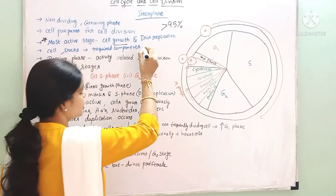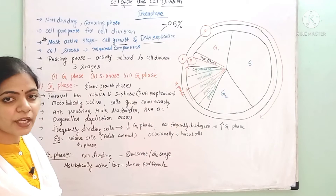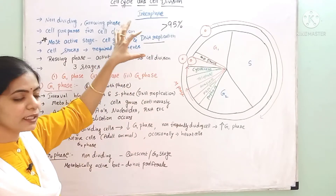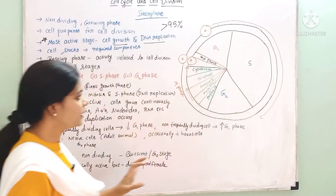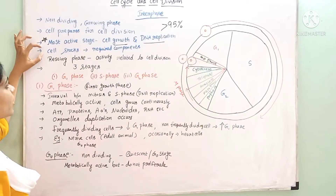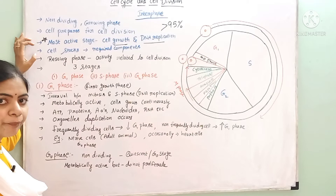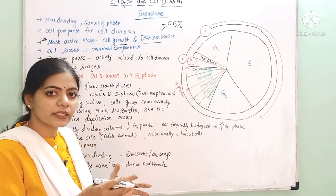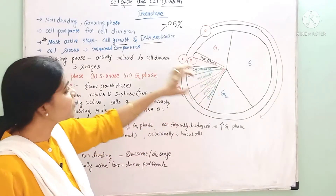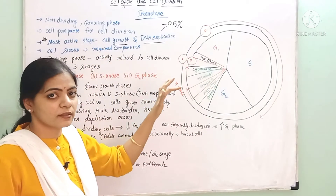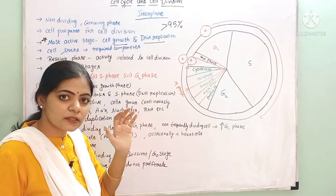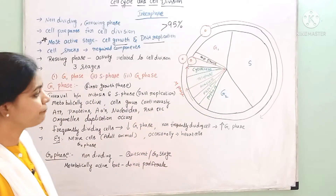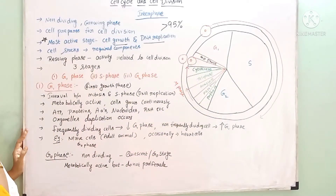DNA replication also occurs during interphase. This is the most active phase. In this phase, the cell stocks all the required components — whatever biomolecules and components are required for the next coming dividing phase — those are stored here in the interphase.